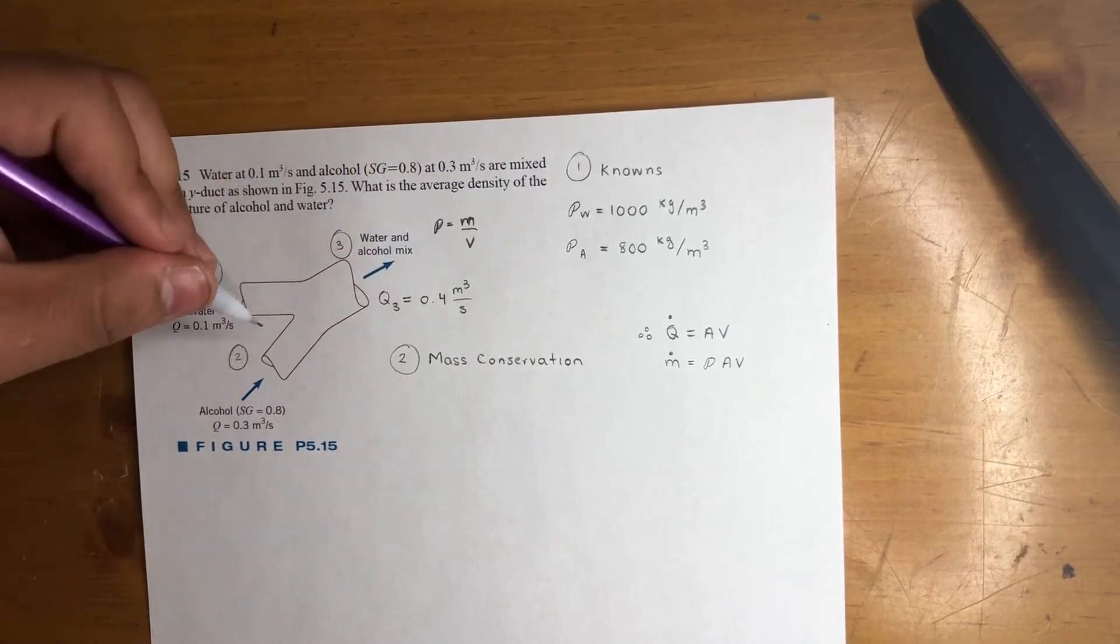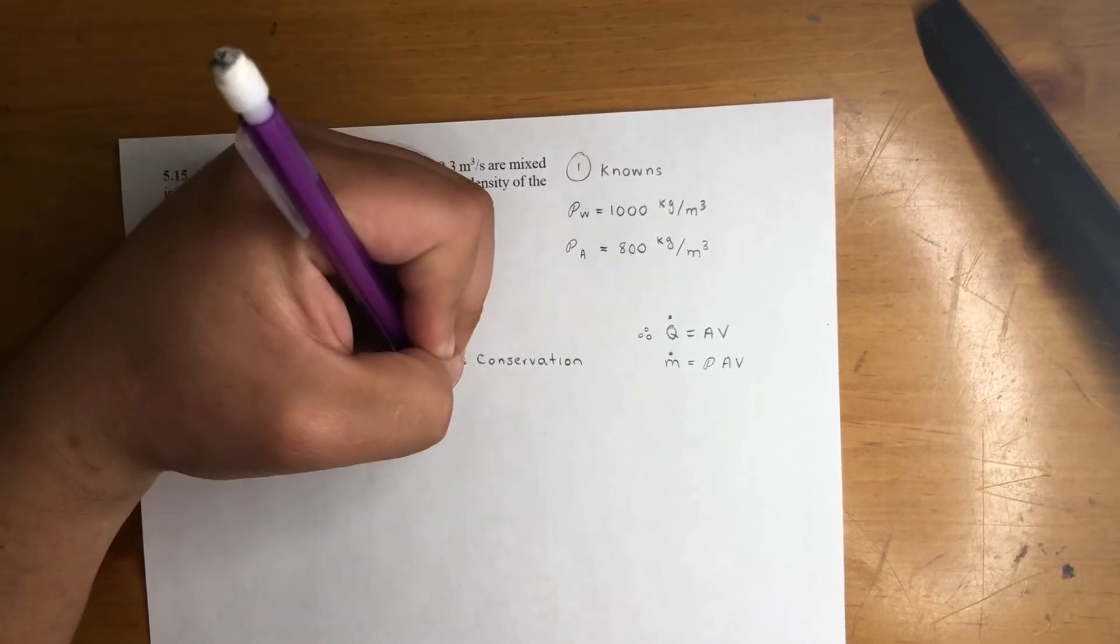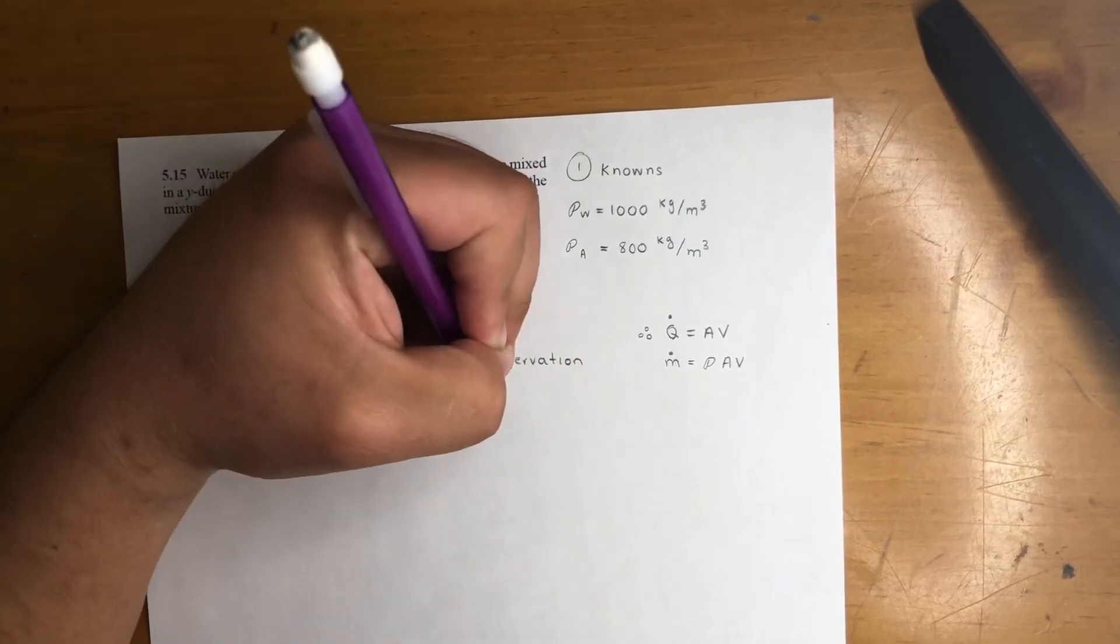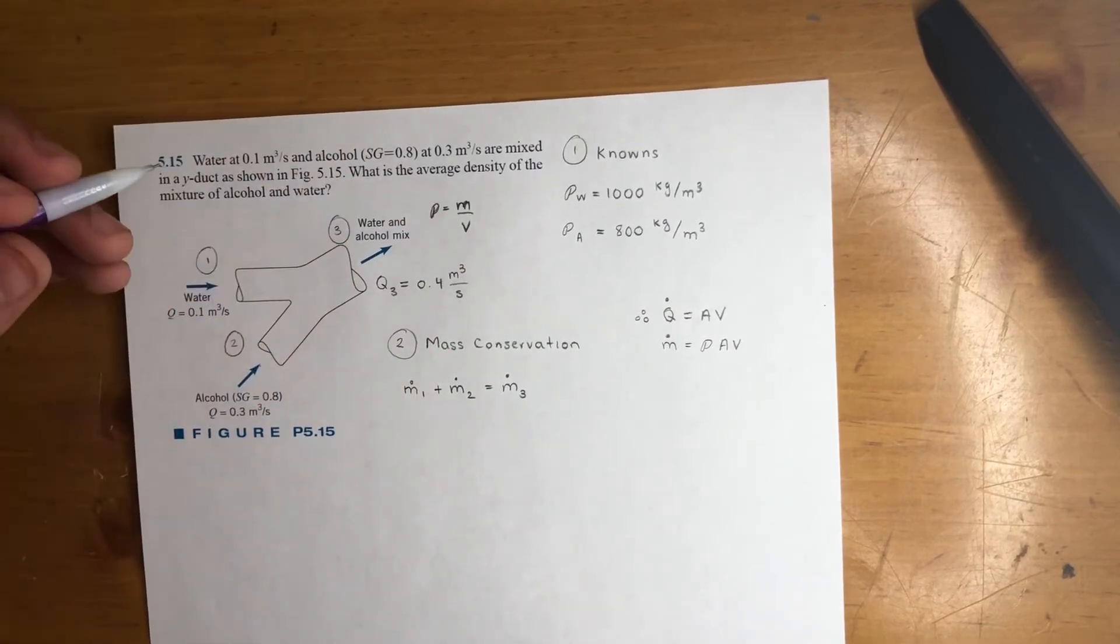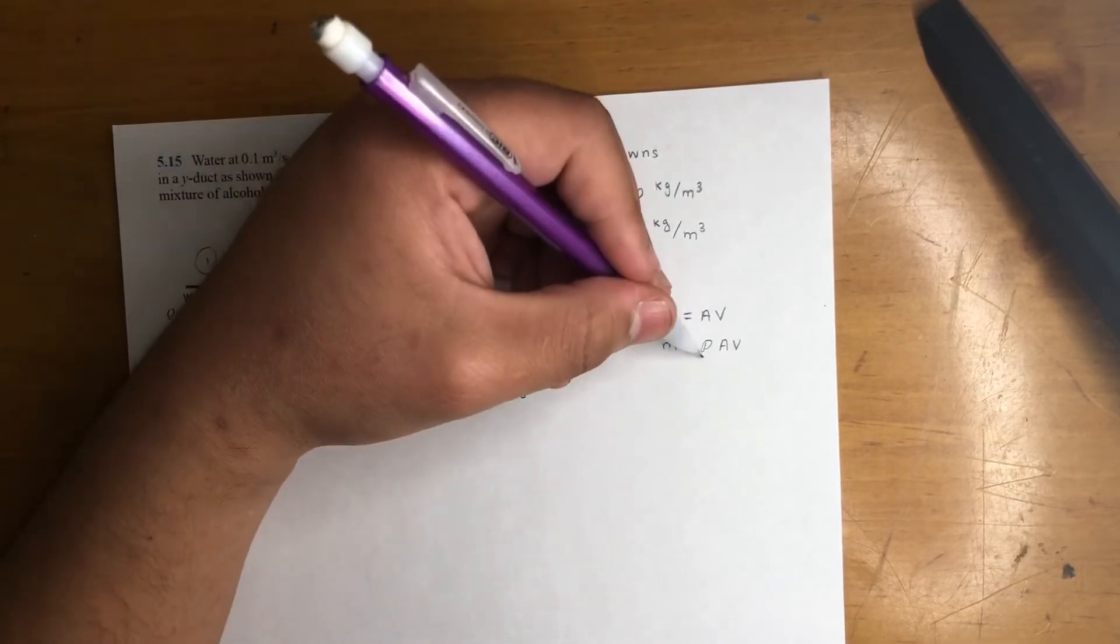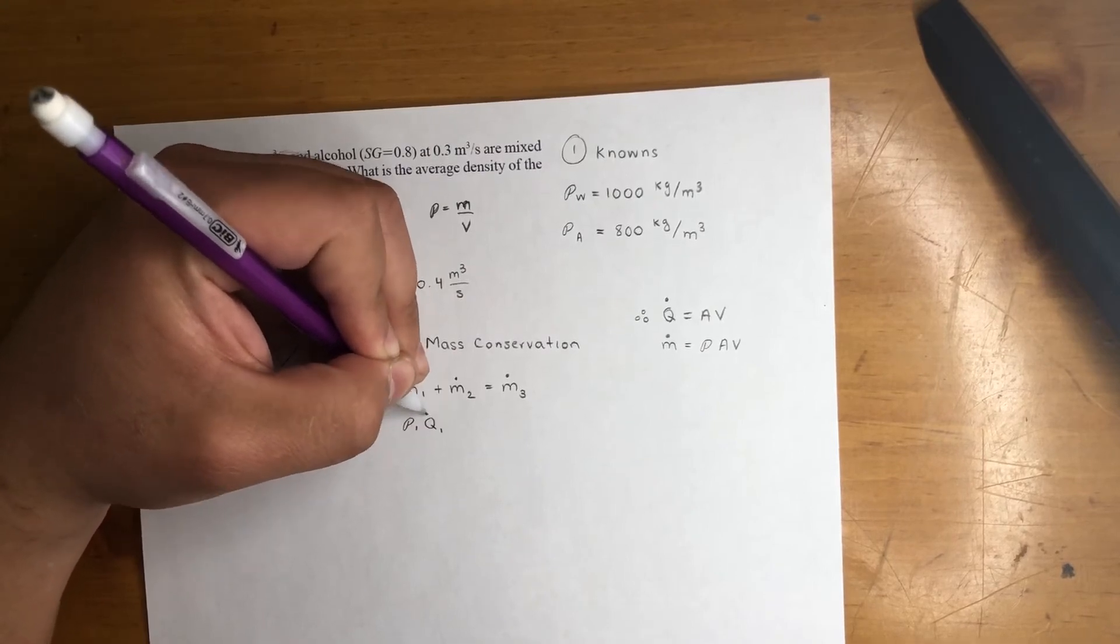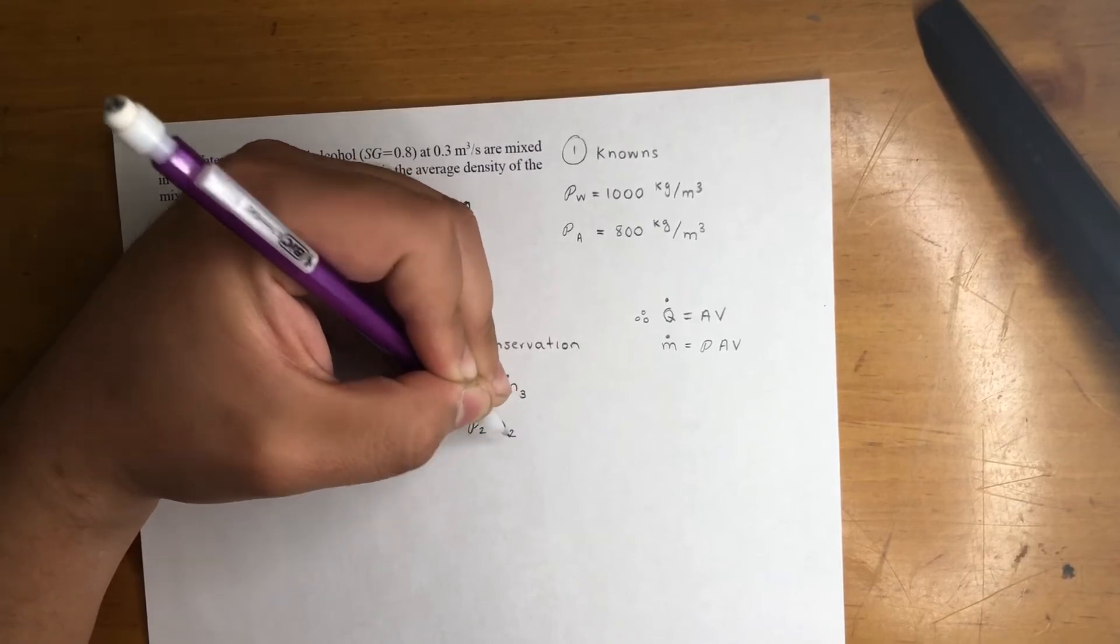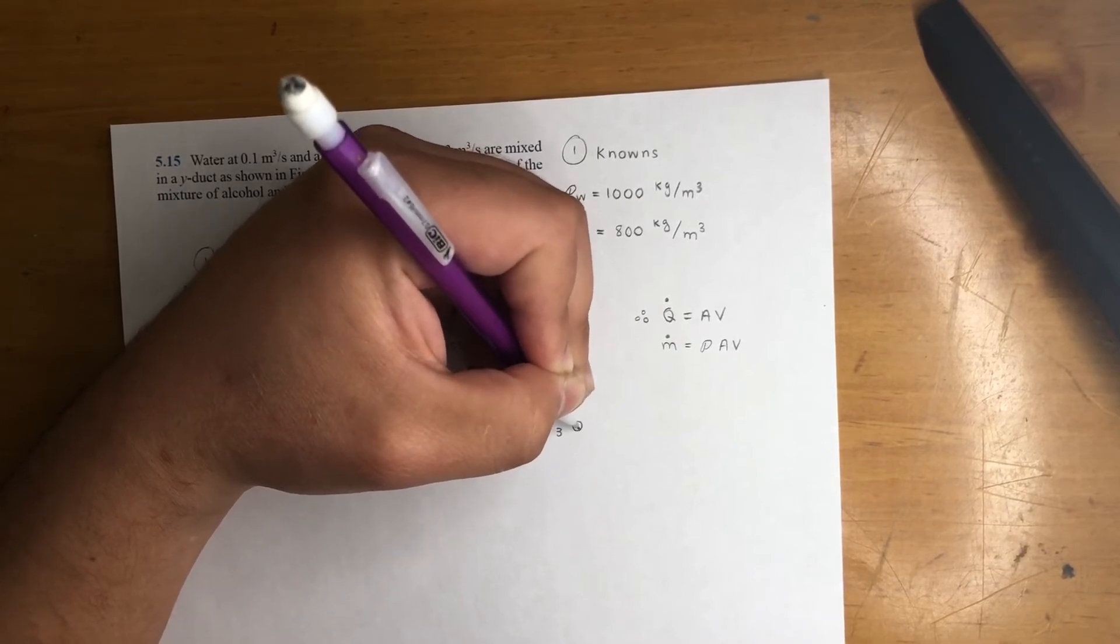So we could go ahead and do mass conservation on this one. So we know what comes in, in terms of mass. Right, they both come in, these two, is equal to whatever comes out. So we end up with that equation right there. We could go ahead and start plugging in, we could do rho av. But since they already give us the flow rates, we're just going to do rho q. So rho 1 q1 plus rho 2 q2 is equal to rho 3 q3.